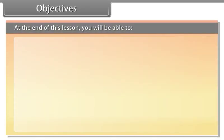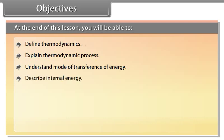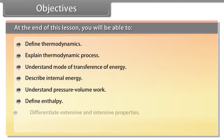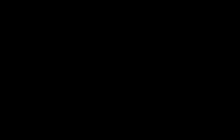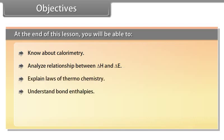At the end of this lesson, you will be able to: define thermodynamics, explain thermodynamic processes, understand modes of transference of energy, describe internal energy, understand pressure-volume work, define enthalpy, differentiate extensive and intensive properties, calculate heat capacity, know about calorimetry, analyze the relationship between delta H and delta E, explain laws of thermochemistry, understand bond enthalpies, define spontaneous processes, and calculate Gibbs energy.